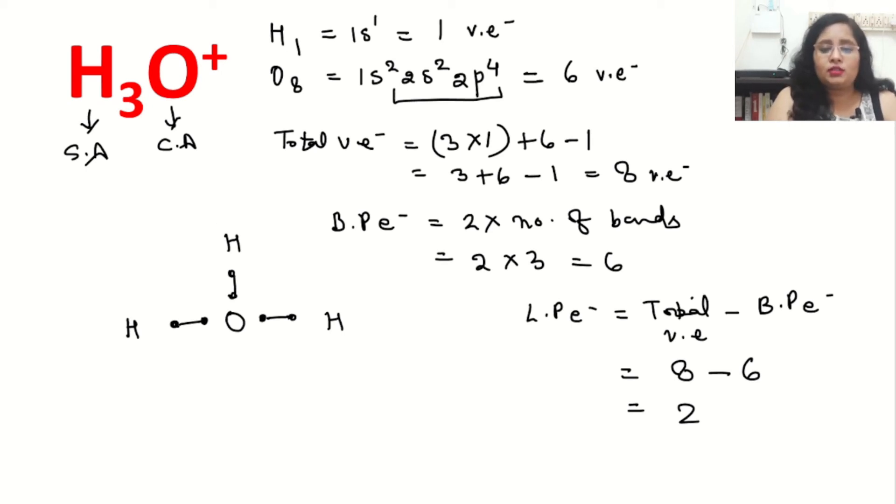Now come to the oxygen. Oxygen is now having six electrons in the form of bonds here. So we will put this lone pair of electrons here, so that oxygen will complete its octet. Now oxygen is having a total of eight electrons, and this is the complete structure.